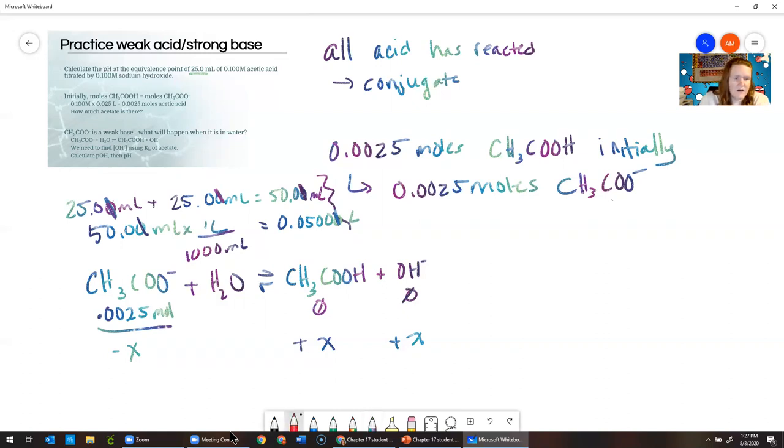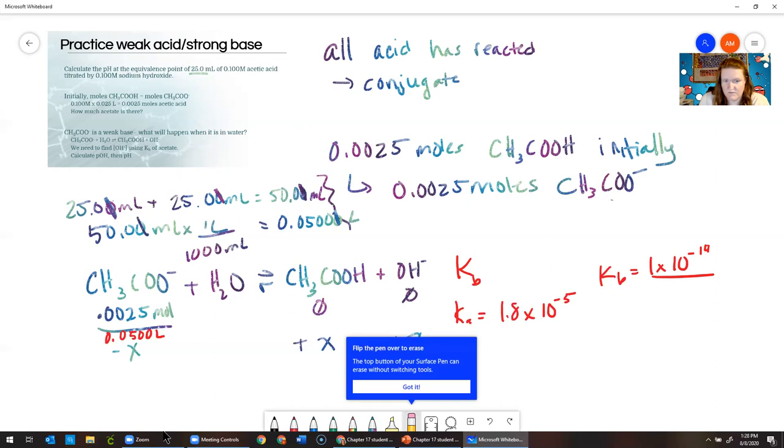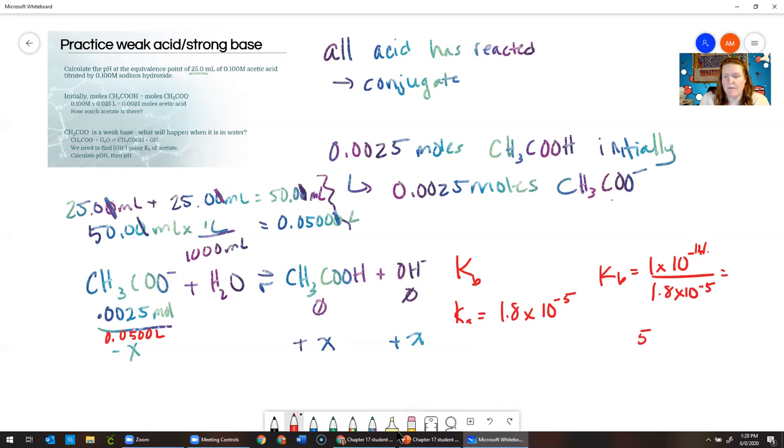The volume at the equivalence point is 25 milliliters of acid plus 25 milliliters of base—I noticed they have the same concentration. We want to convert that to liters to get a molarity. You'll notice I don't drop off my significant figures when I convert to liters. We still have three sig figs in the problem. Our molarity here is that number of moles divided by liters.